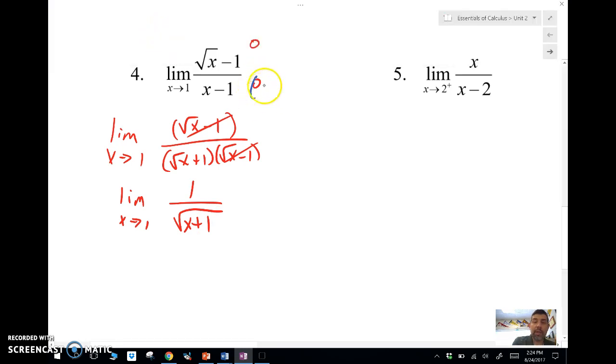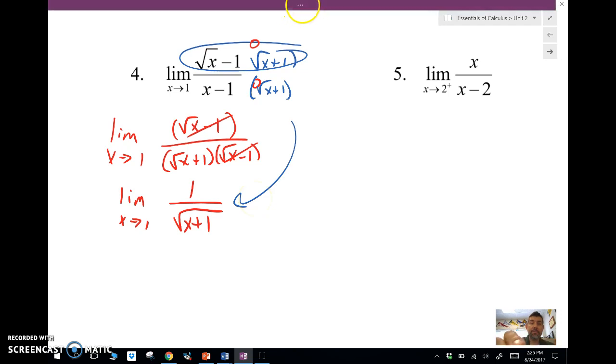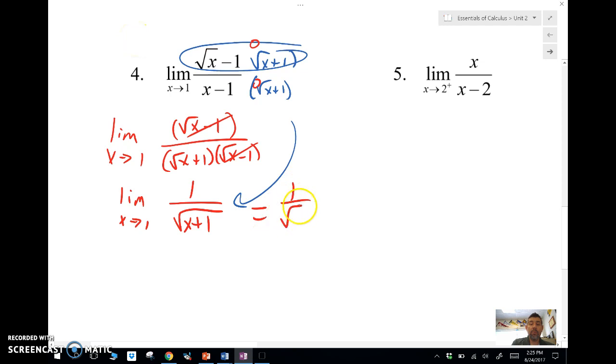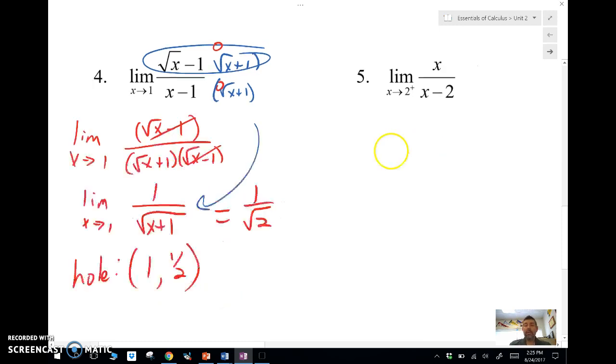Then you get one over square root of X plus one. The other method is using the conjugate. What I would do is multiply the bottom by square root of X plus one and the top by square root of X plus one. Then I'm going to multiply these two guys out and end up with X minus one, which is going to cancel out. Either method is appropriate. Now once I have this, I can plug in one and I get one over root two. The hole here is at one comma one half.